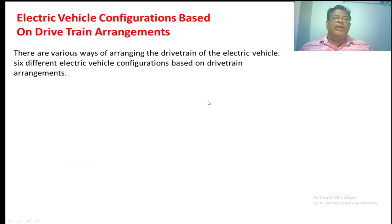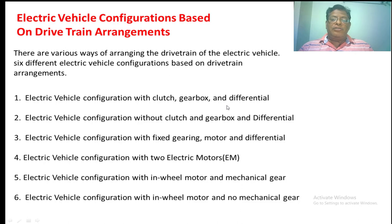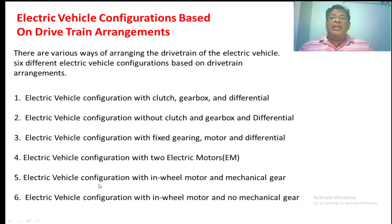Nearly six types of arrangements are used by the manufacturers and designers: electric vehicle configuration with clutch, gearbox and differential; without clutch, gearbox and differential; with a fixed gear motor and differential; using two motors; with in-wheel motor and mechanical gearing; and with in-wheel motor and no mechanical gearing.